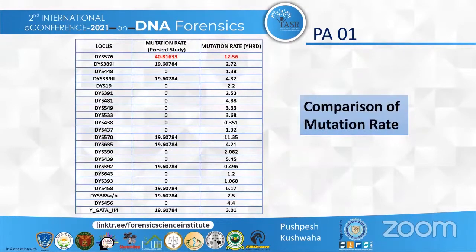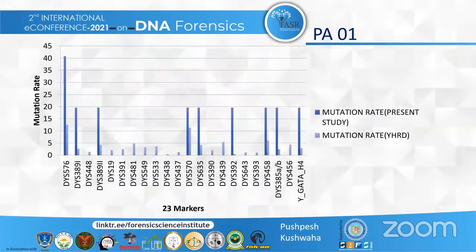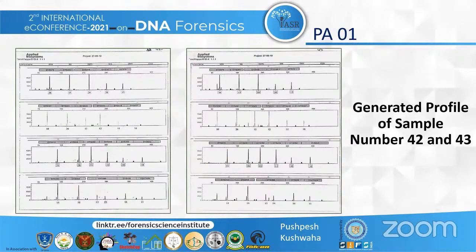We compared the results obtained with the data present at YHRD on the same 23 markers. The mutation rate was maximum at DYS576 in both datasets across all 23 markers, and our results were in concordance with the YHRD database. The mutation rates from the present study and YHRD for all 23 markers are represented graphically here, clearly showing DYS576 with the maximum mutation rate.